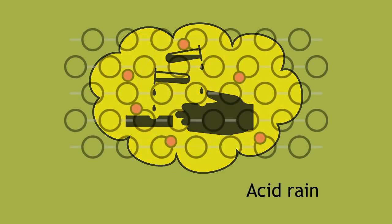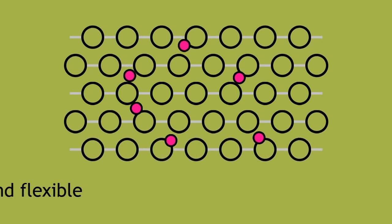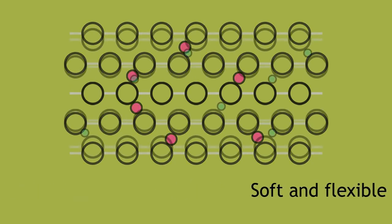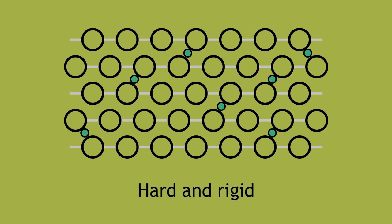In summary, a plasticizer makes a polymer softer and more flexible, whereas a hardener or a cross-linking agent makes a polymer harder and more rigid.